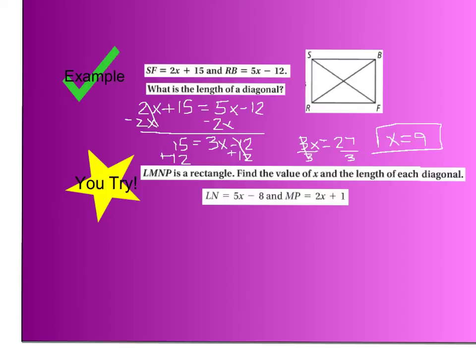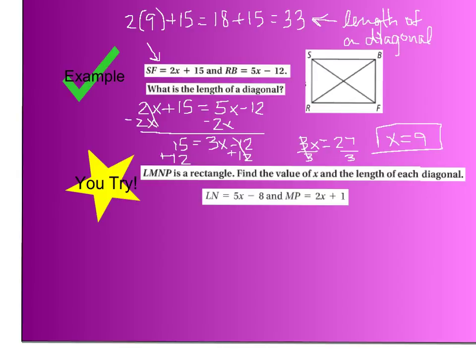But my original question said, what is the length of a diagonal? It doesn't matter which one because they're the same length. So all I have to do now is take this 9 and plug it back in. I'm going to plug it into this expression right here. I have 2 times 9 plus 15. That's 18 plus 15, which equals 33. So I know that 33 is the length of a diagonal.